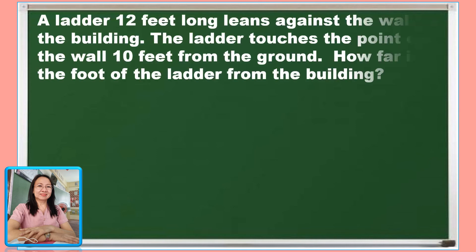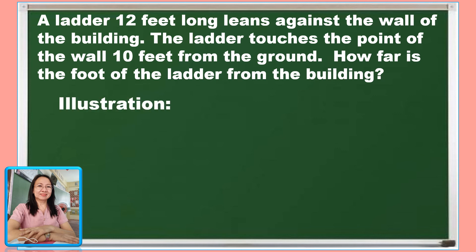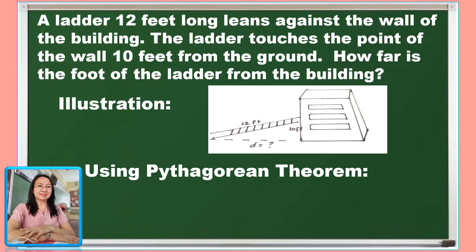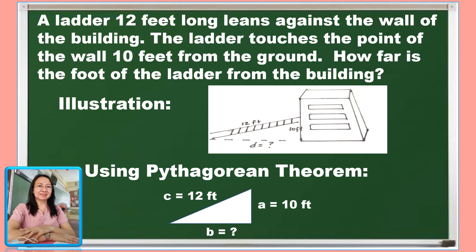Let us see another application of radicals with our next problem. A ladder, 12 feet long, leans against the wall of a building. The ladder touches a point on the wall 10 feet from the ground. How far is the foot of the ladder from the building? Looking at the figure, a ladder leaning on the wall forms a right triangle. Since we have a right triangle, we can apply the Pythagorean theorem. The hypotenuse is the length of the ladder, the altitude is the height the ladder reaches on the wall, and the base D is the unknown — the distance from the foot of the ladder to the building.